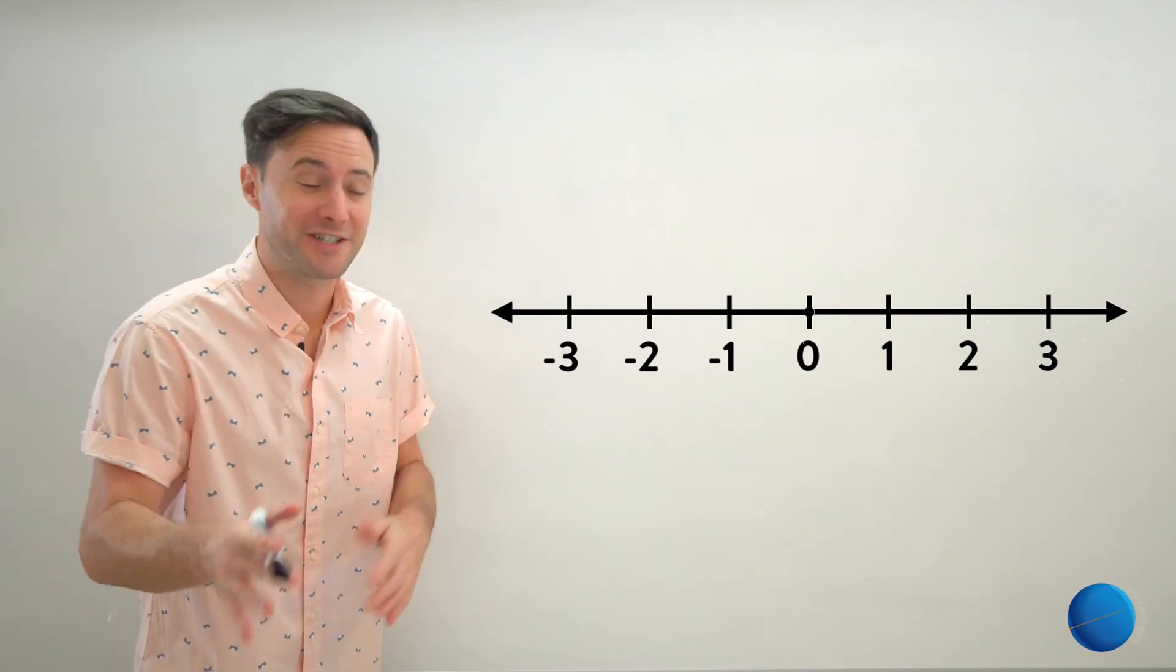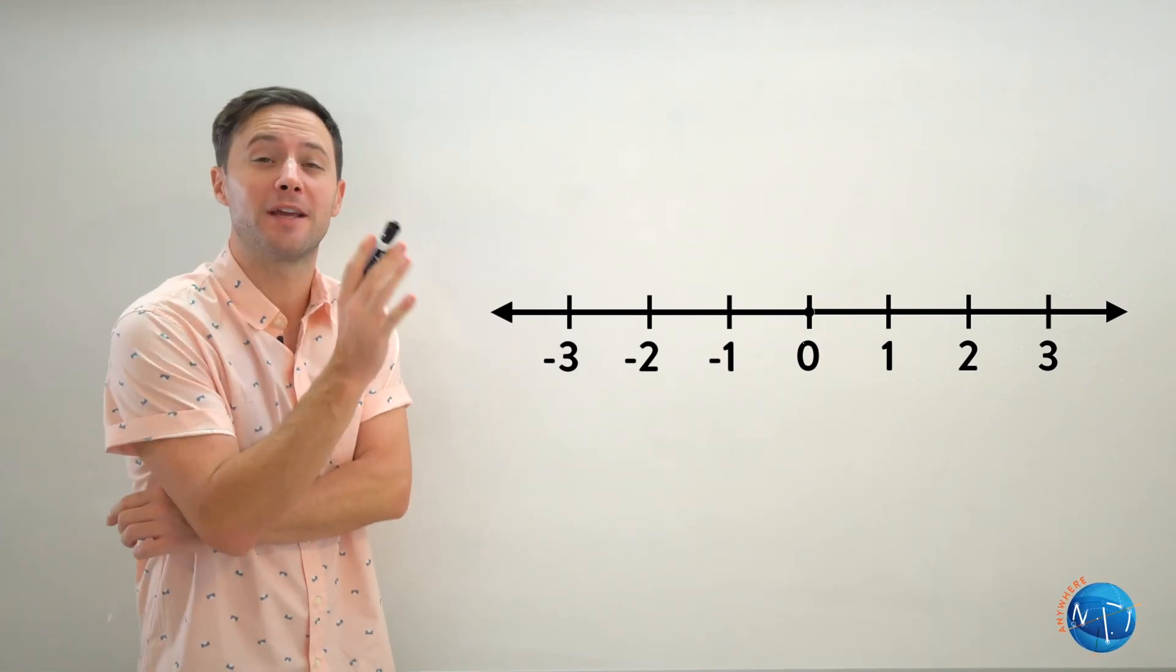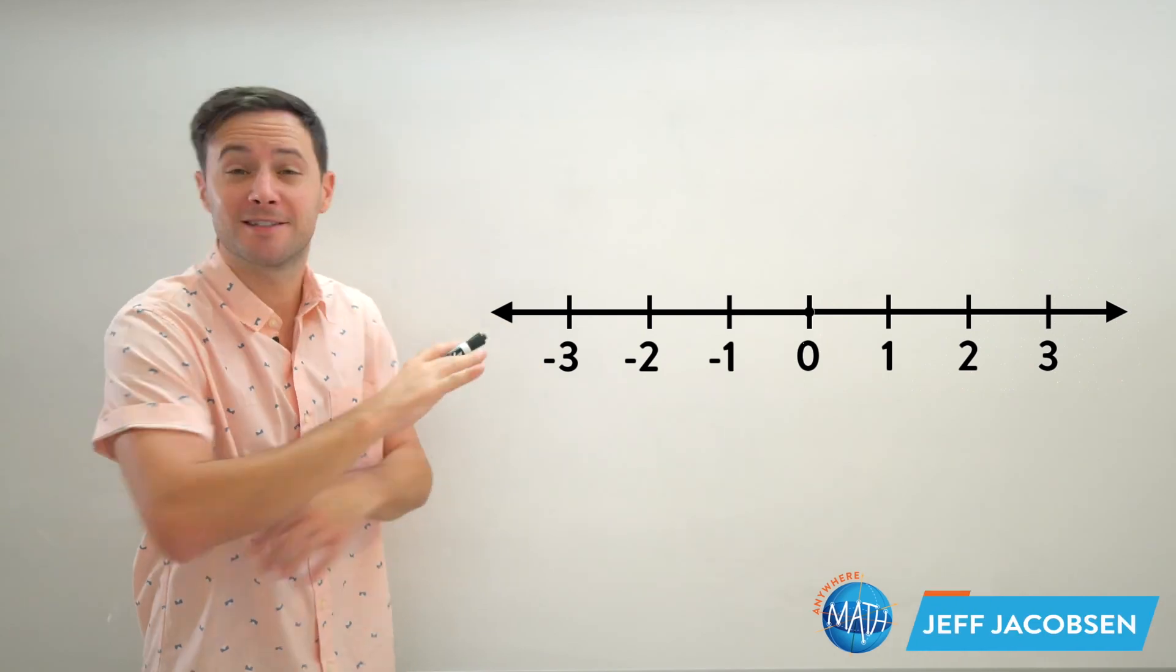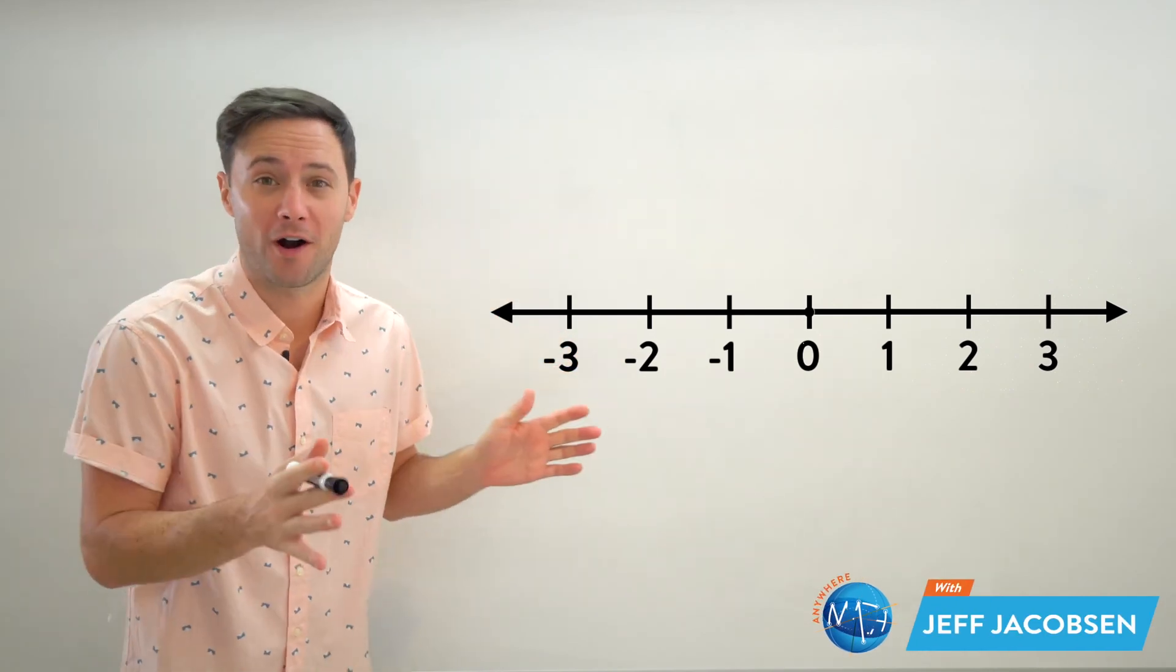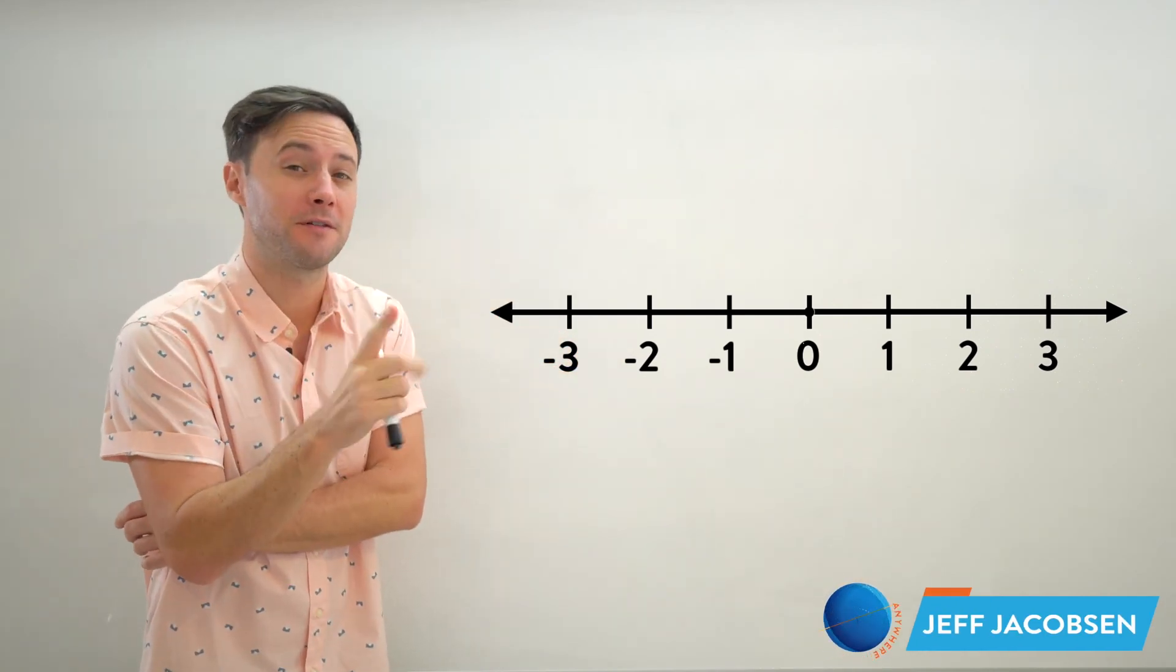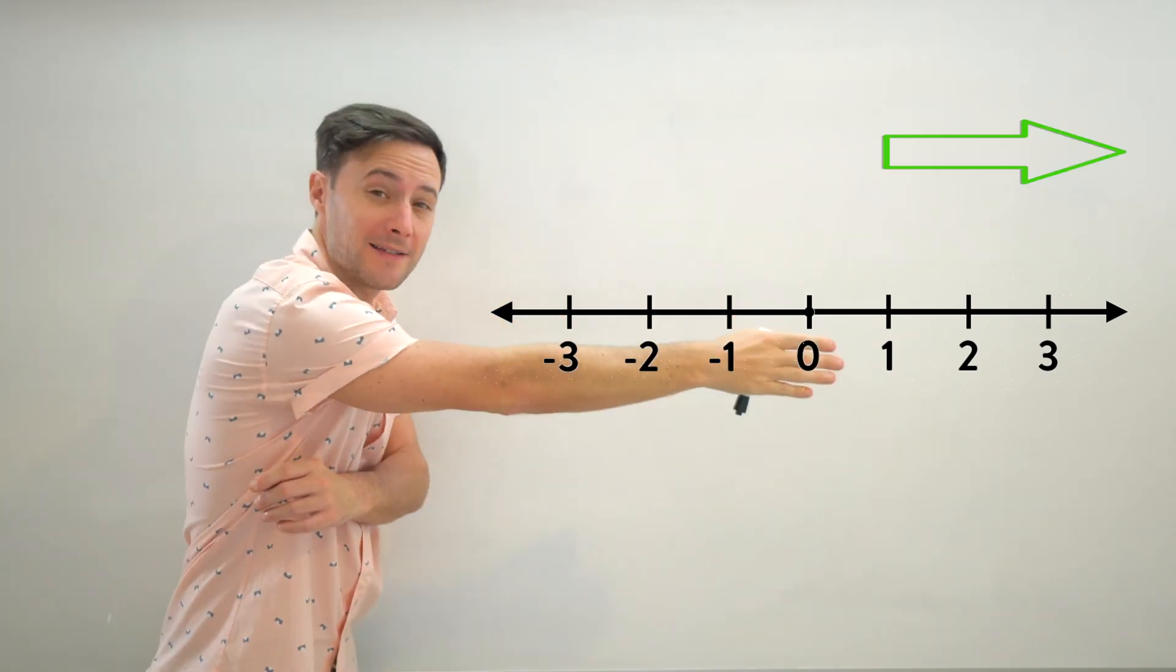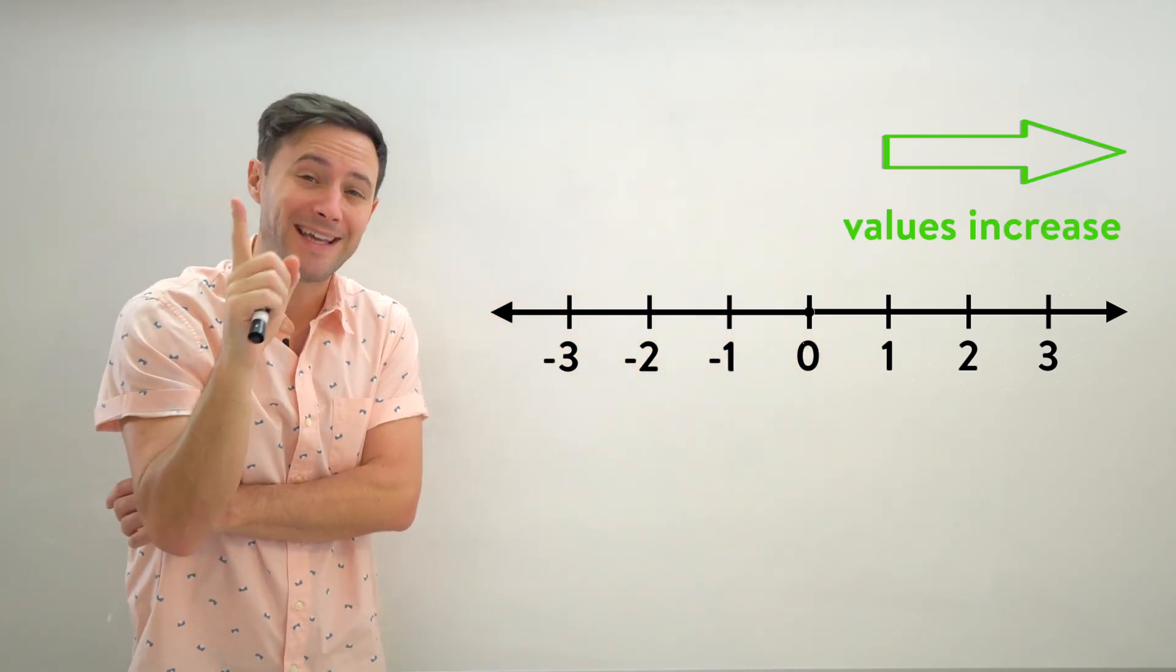When comparing or ordering integers, it really helps to think of a number line. It doesn't matter where on the number line you are, two things are for certain. One, when you move to the right on a number line, the values increase.